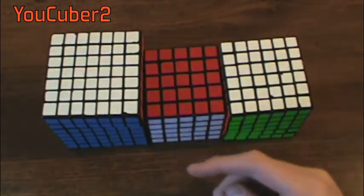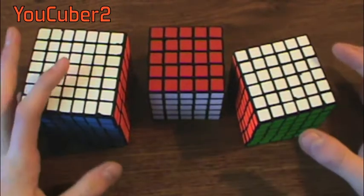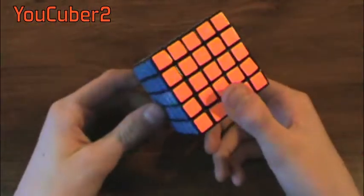I will also leave timestamps in the description down below where you can click on what cube you'd like to see quickly lubricated. Let's start off with 5x5.